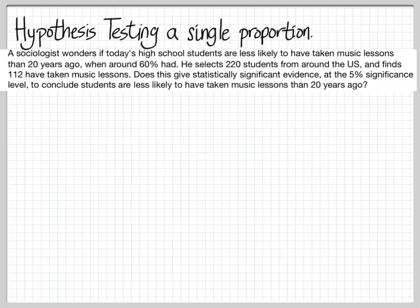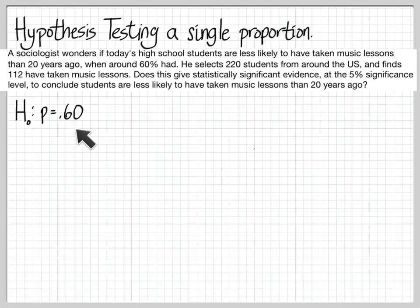What we're going to do is compute the p-value and use that to make our decision. Several steps. First, we have to write hypotheses. The null hypothesis is always the 'nothing has changed, there is no effect, things are as they always have been' sort of value. So if that's the case here, then it would still be 60%. And then the alternate is what we're trying to prove.